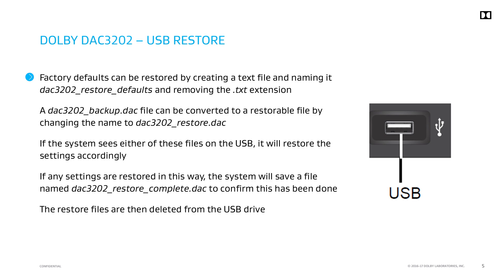Factory defaults can be restored by creating a text file, naming it DAC-3202_restore_defaults and removing the .txt extension. A backup file can be converted to a restore file by changing the name DAC-3202-backup.dac to DAC-3202_restore.dac. If the system sees either of these files on the USB drive, it will restore the settings accordingly. To confirm that any settings are restored in this way, the system will save a file named DAC-3202__complete.dac.